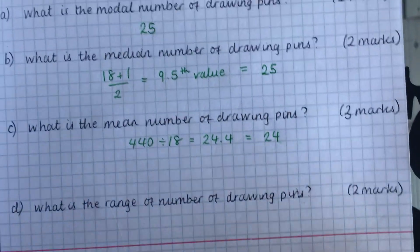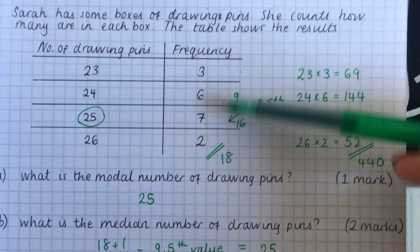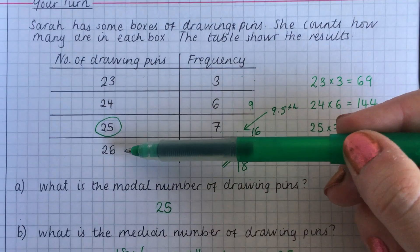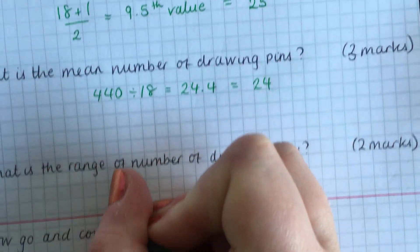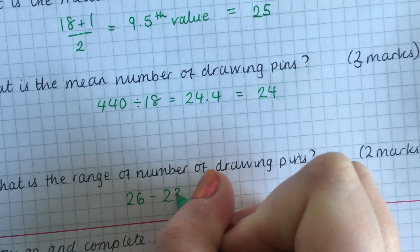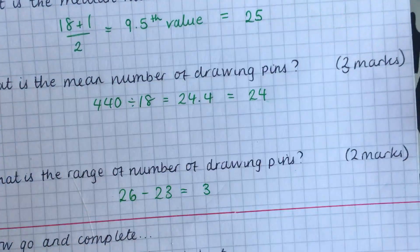And the final question is the range. Again, the range is not in the frequency. It's in the number of drawing pins. We've got 26 minus 23. So 26 minus 23 is, of course, 3. So our range is 3.